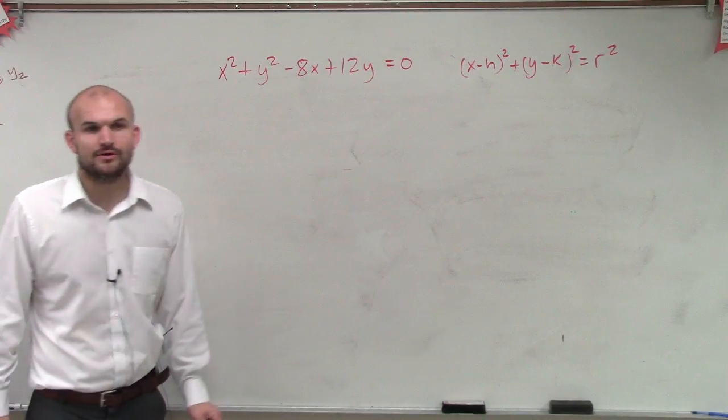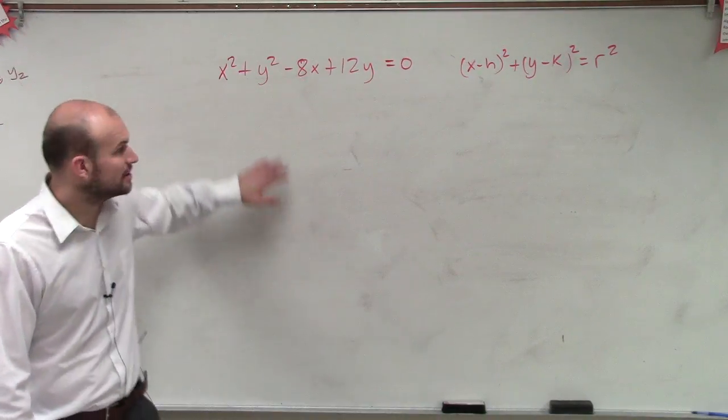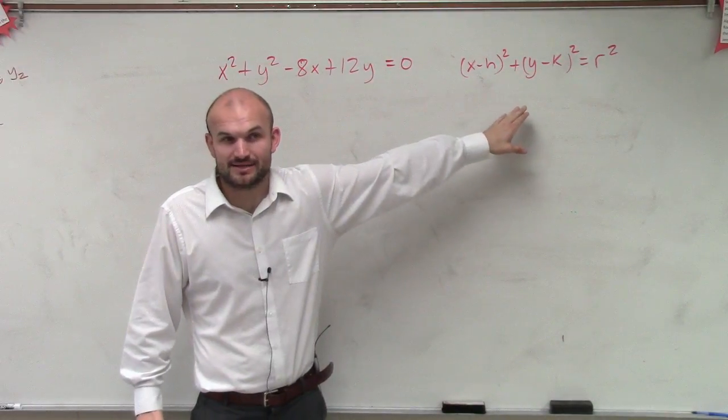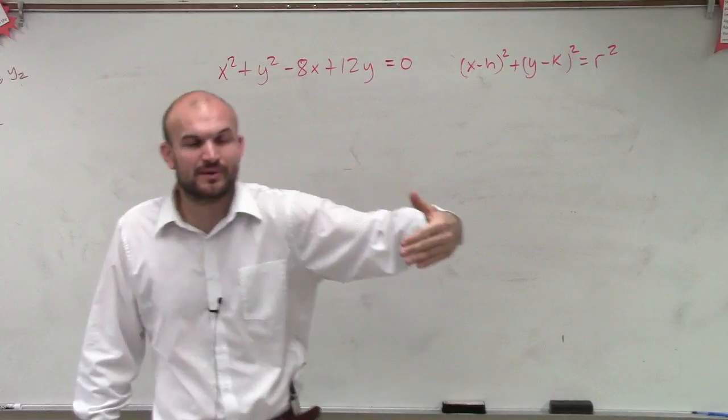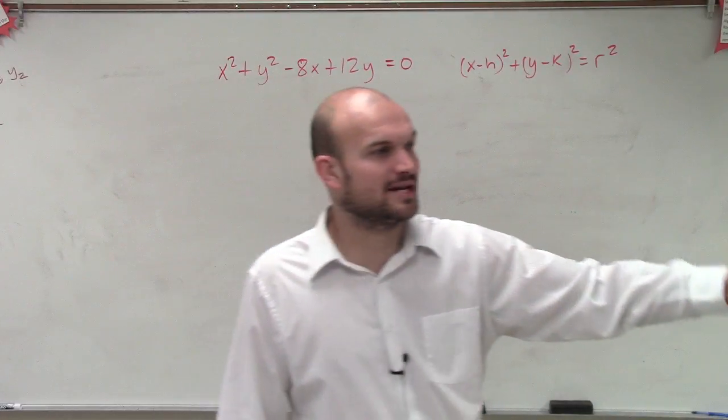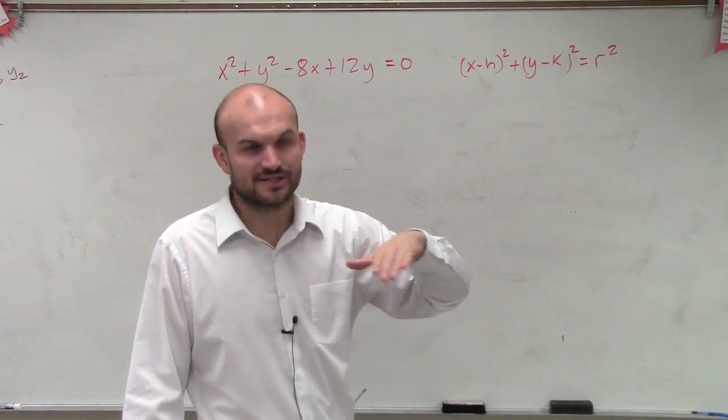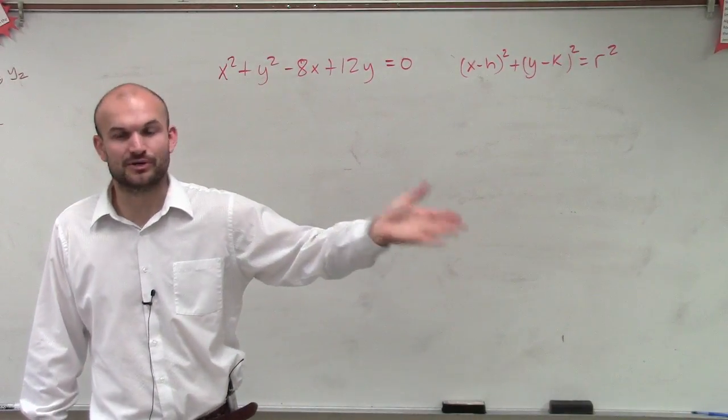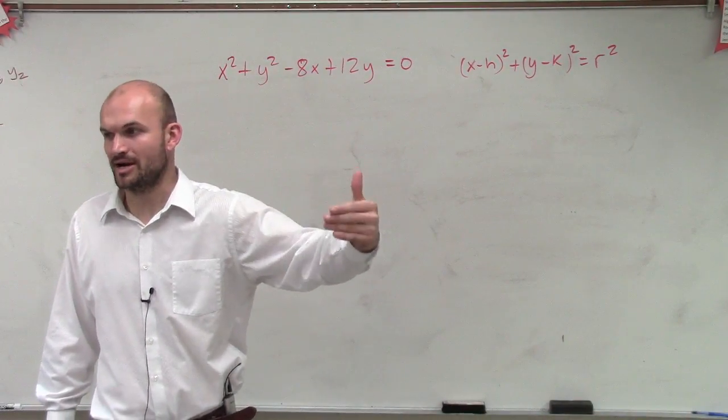So what I'm going to want to do, Ava, in this problem is take this and rewrite it in this format. Now, remember in parabolas, when we didn't have a quadratic that was in our vertex form, we had to complete the square once. We had to complete the square to produce our perfect square binomial.